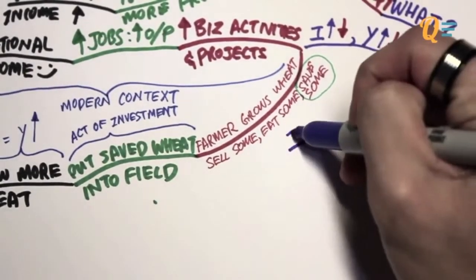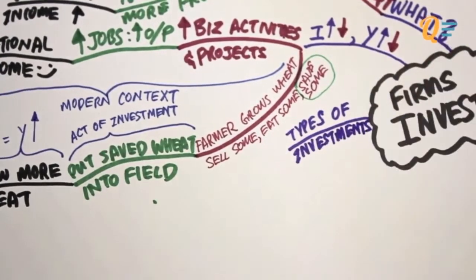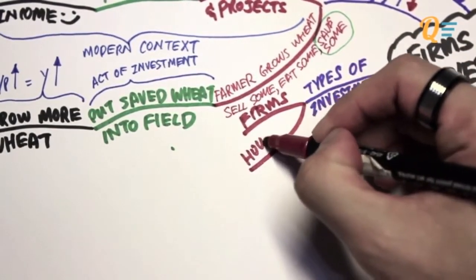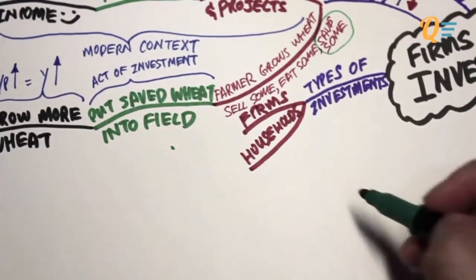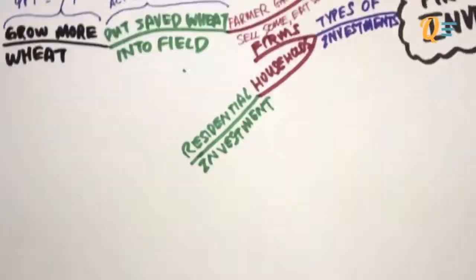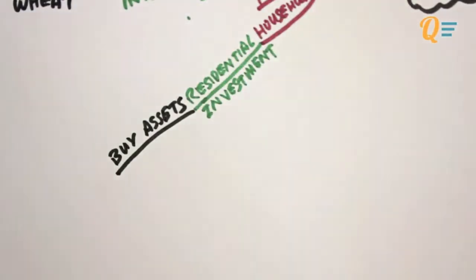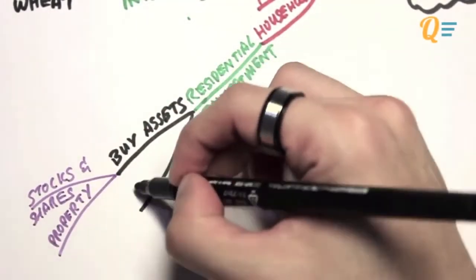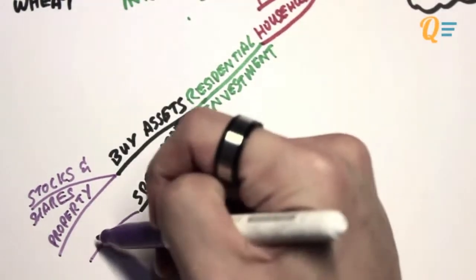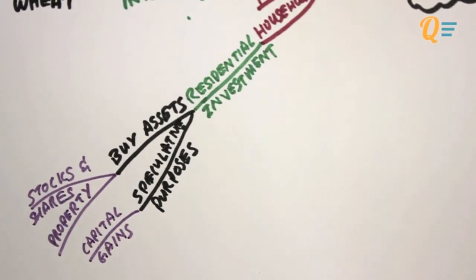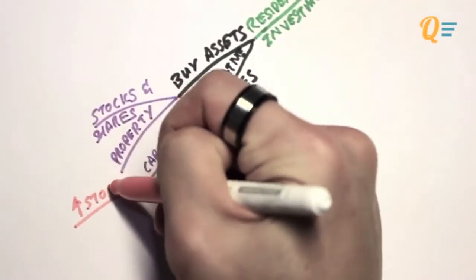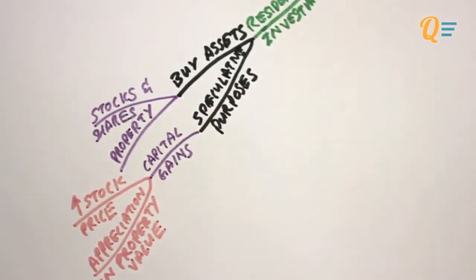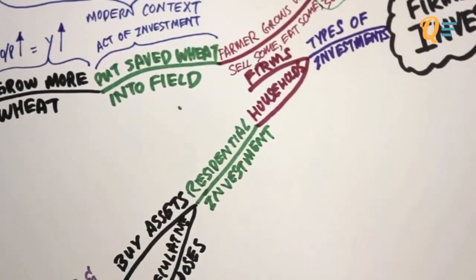There are typically three types of investment undertaken by two major groups: firms and households. Let's talk about household investment activities first. When a household invests, we call this residential investment. A household can buy certain types of assets such as stocks and shares, or even property like housing, with a speculative purpose — meaning they are looking for a capital gain. A capital gain refers to an increase in stock price or appreciation in property value, so they can sell those assets in the future at a higher price to make a profit.